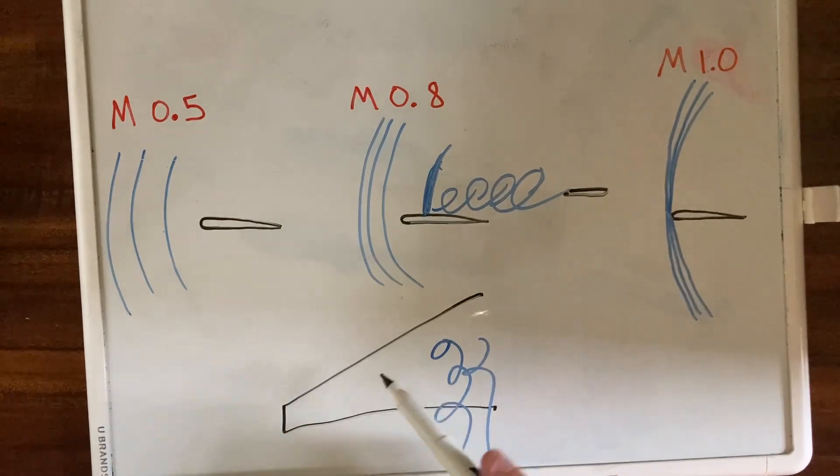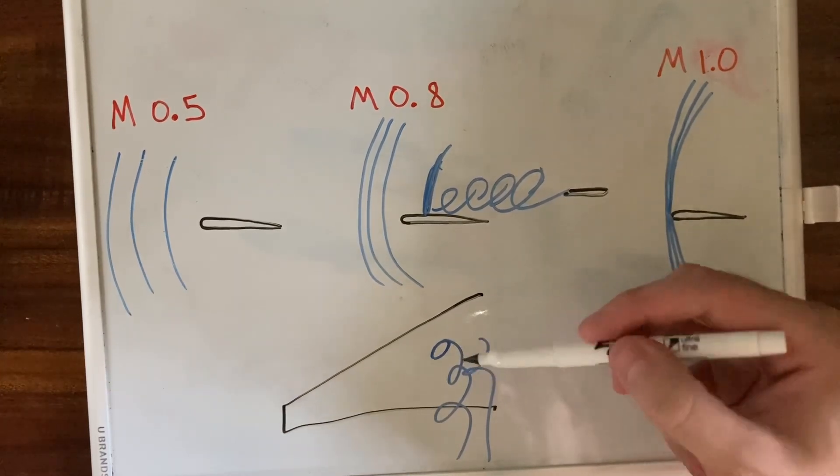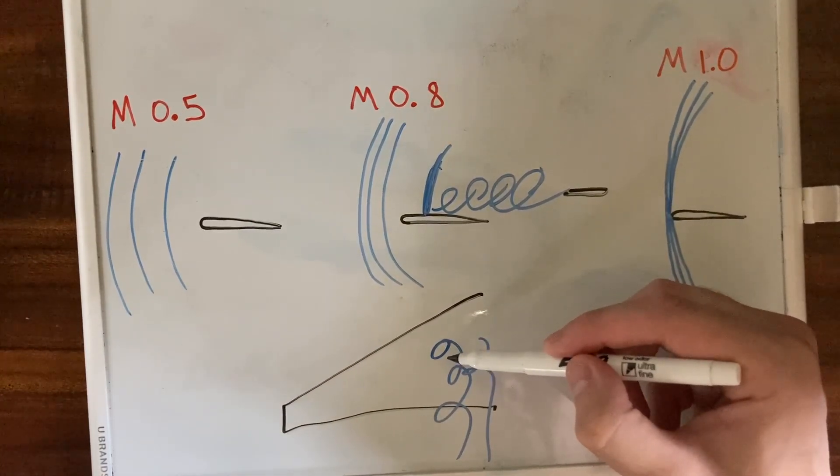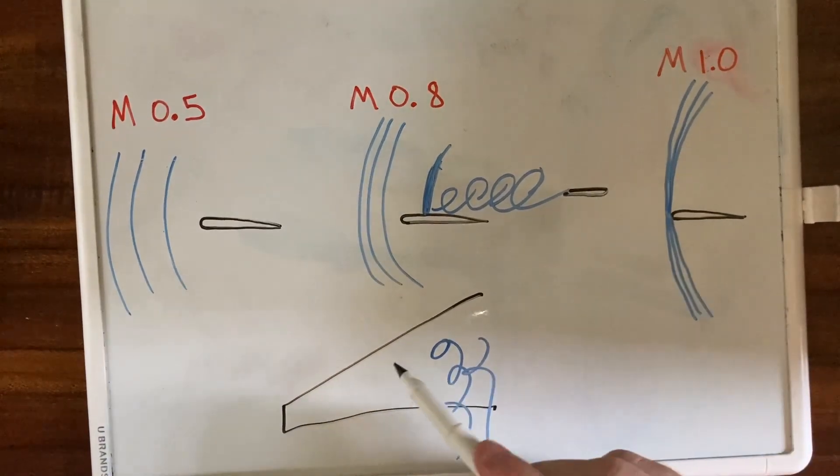The part of the wing that is still producing lift is this part that is swept back here. If the center of pressure, the center of lift from the wing, was here somewhere around here before, now this part of the wing isn't producing lift anymore.